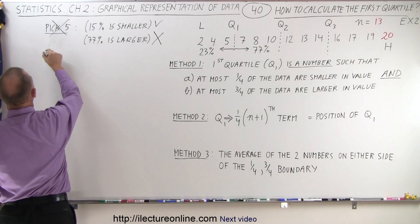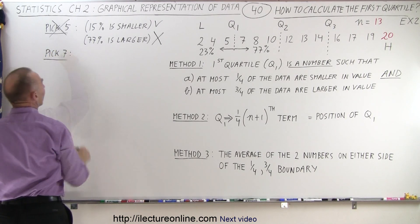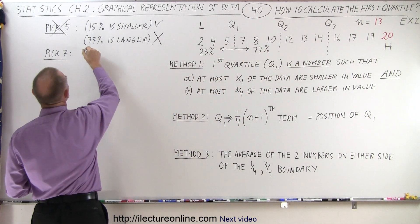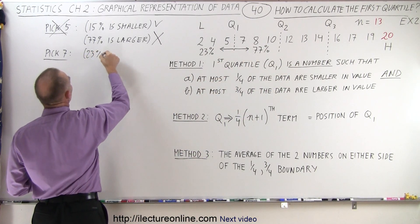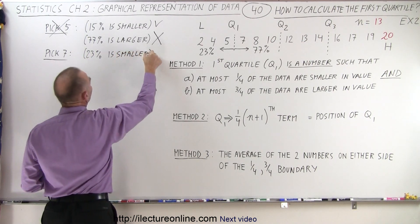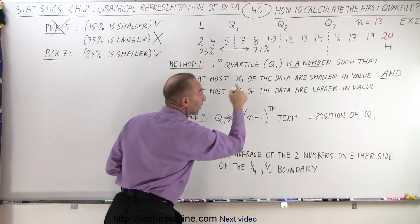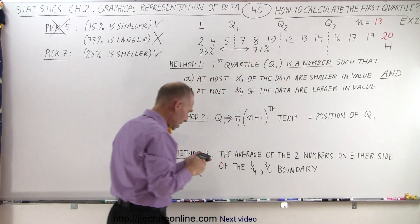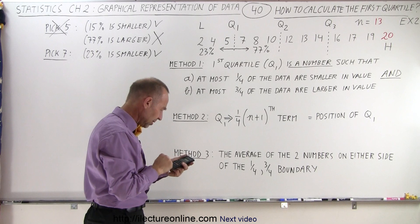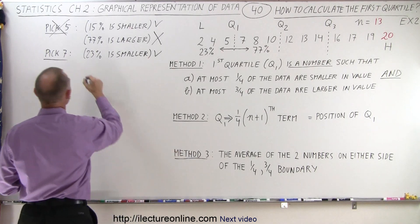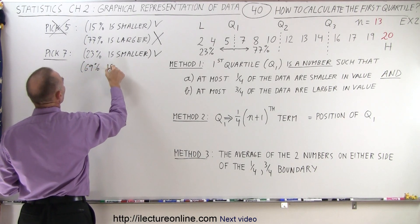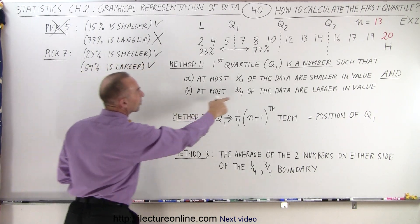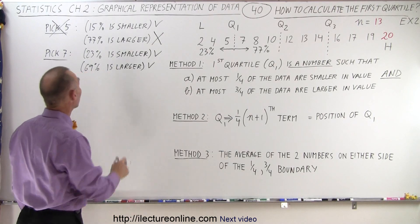How about number 7? So pick 7, and if we do that, then 3 out of 13, which is 23%, is smaller. That meets the condition that it cannot be more than 25%. And secondly, to the right there would be 9 out of 13, 9 divided by 13, which is 69%.